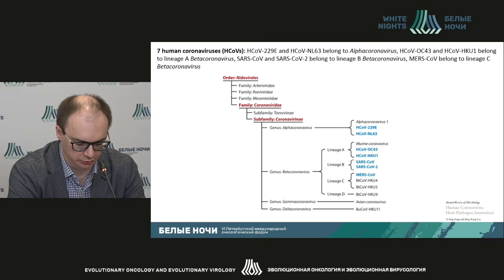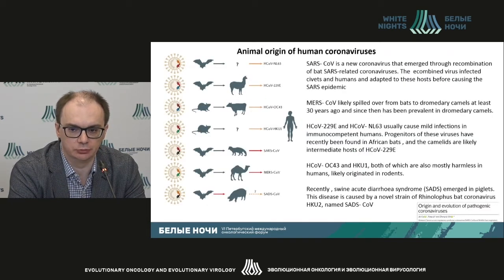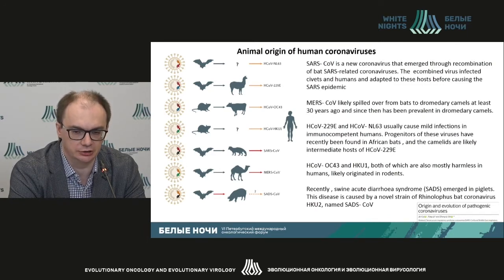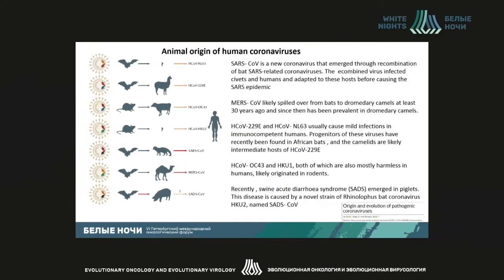Most of the viruses relate to the beta coronavirus group. As far as the origins are concerned, the key reservoir are bats. Five out of seven viruses came from bats. Two of the coronaviruses, including HCoV-OC1, come from mammals.